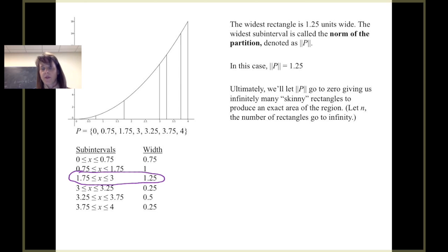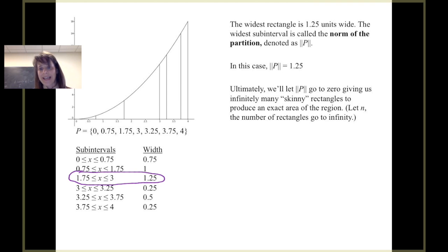Eventually — not in this video, but in one of the next videos — we'll talk about how we let the norm, the length of our widest subinterval, go to 0. This ultimately gives us infinitely many skinny rectangles, which will then give us an exact area of the region. In other words, we're going to let n, the number of rectangles, go to infinity.